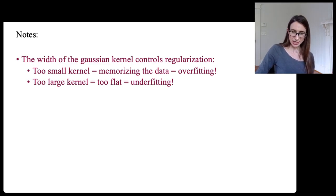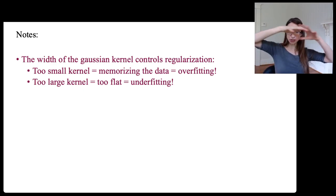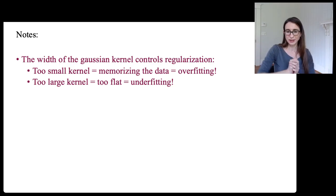All right, so just a few notes. The width of the Gaussian kernel, which the user chooses in advance, actually does control, it's another control on regularization. So, you have a regularization term but the kernel itself is another control on regularization. If the kernel is too small, that means you have tiny little bumps on each data point and you're just memorizing the data which is exactly overfitting. And if you have a kernel width that's too large, then everything gets just smoothed out and you lose all of the detail and then it's just underfitted and you're not going to be able to fit the data really well.